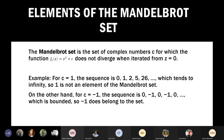The Mandelbrot set is a set of complex numbers c for which the function f(z) = z² + c does not diverge when iterated from z = 0. For example, when c = 1, the sequence is 0, 1, 2, 5, 26, and so on, which tends to infinity — so 1 is not an element of the Mandelbrot set. When c = −1, the sequence is 0, −1, 0, −1, 0, which is bounded — so −1 does belong to the set.